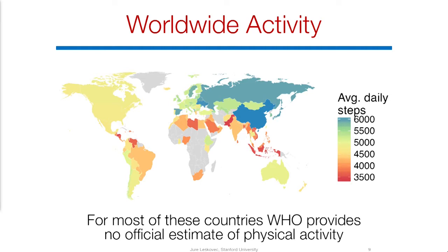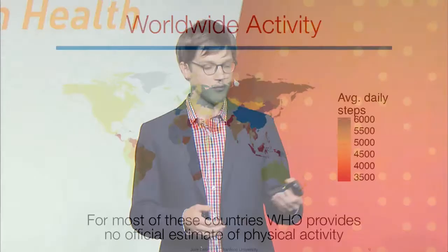Now that we have this data, we can start asking: how is activity — just the average number of daily steps — spread throughout the world? A map appears showing that in the United States and the Americas, activity is a bit low, while in Asia daily activity tends to be high. Of course, there are still parts of the world, mostly in Africa, where we have no data.